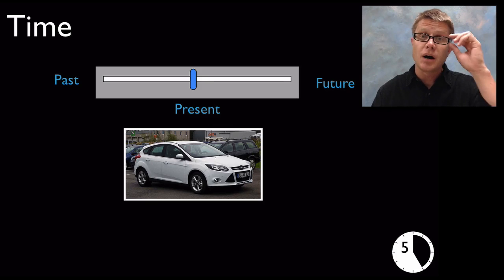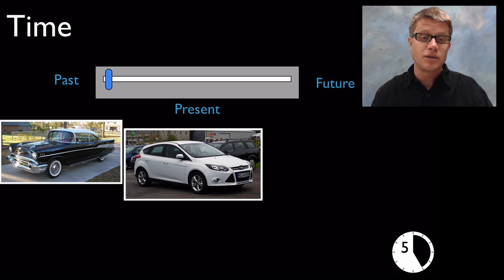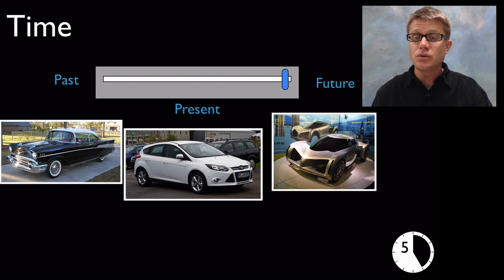As we move into the upper elementary grades we want to talk about how engineering and science change over time. The engineering designs and technology that we have today, for example this is the most popular car on the planet, the Ford Focus, it's going to work today. But we had a totally different design, this is a 57 Chevy back in the past. That was a good solution for back then, and in the future the Ford Focus is going to look outdated. As time changes our engineering solutions change as well.